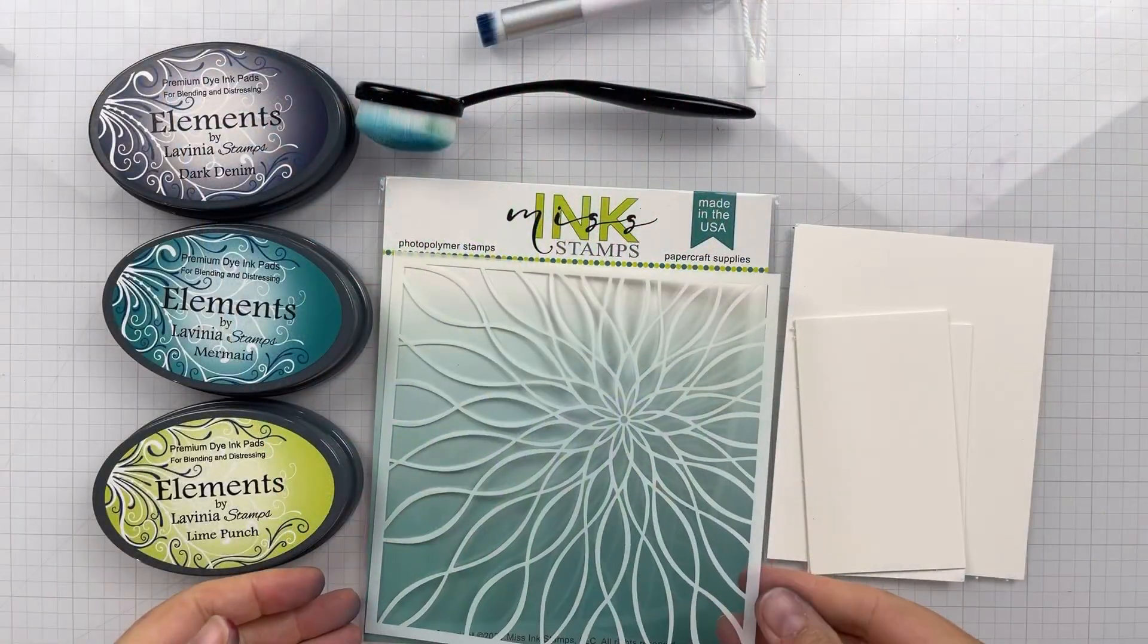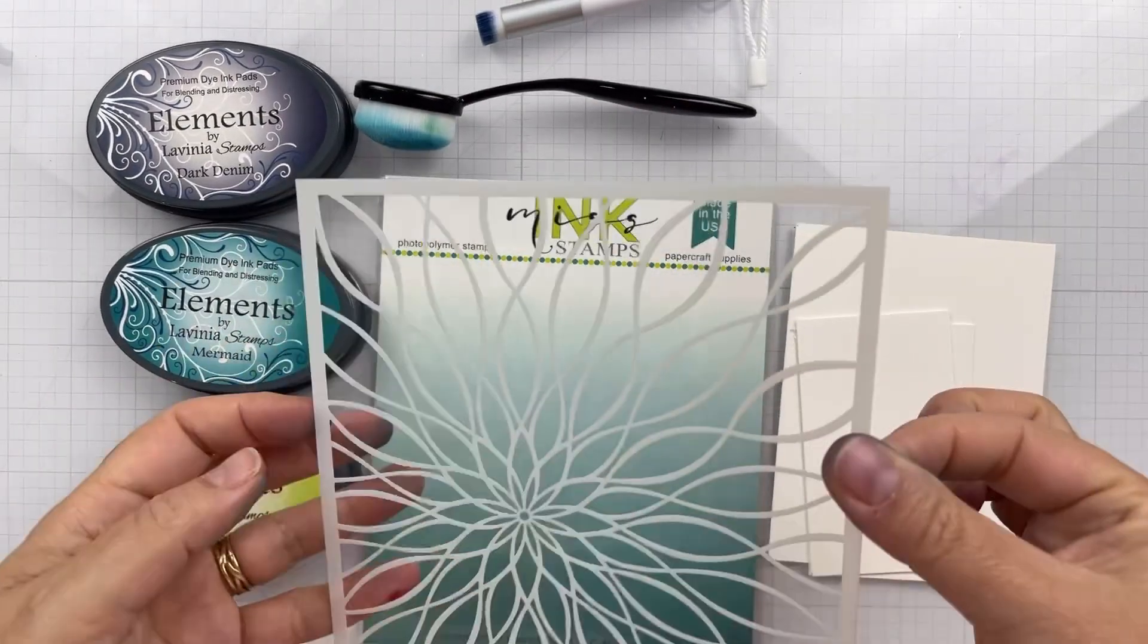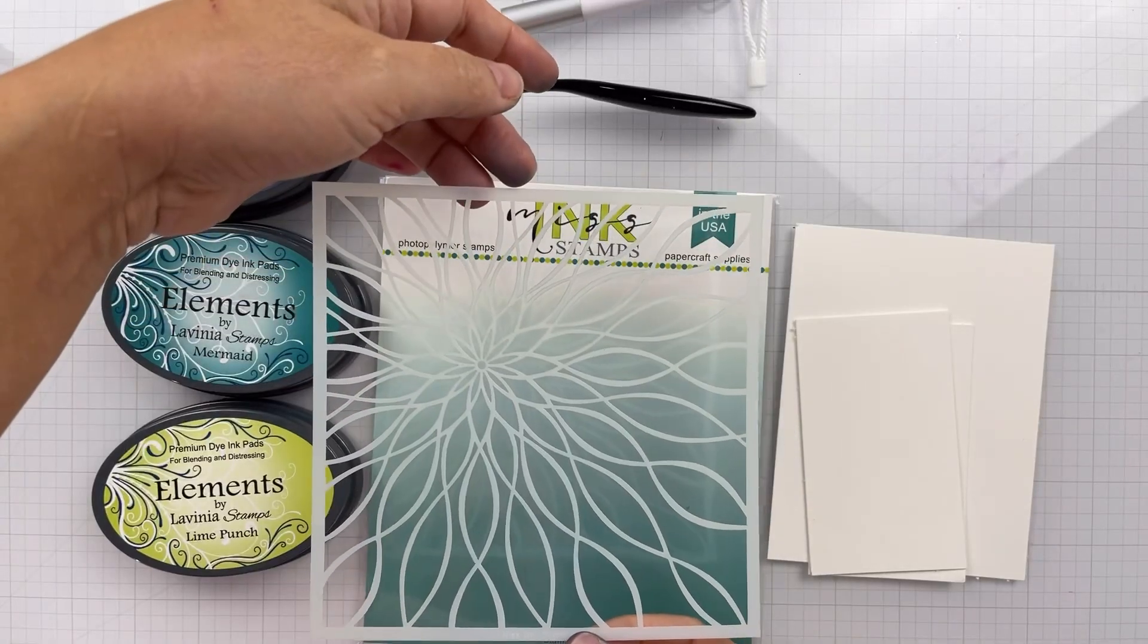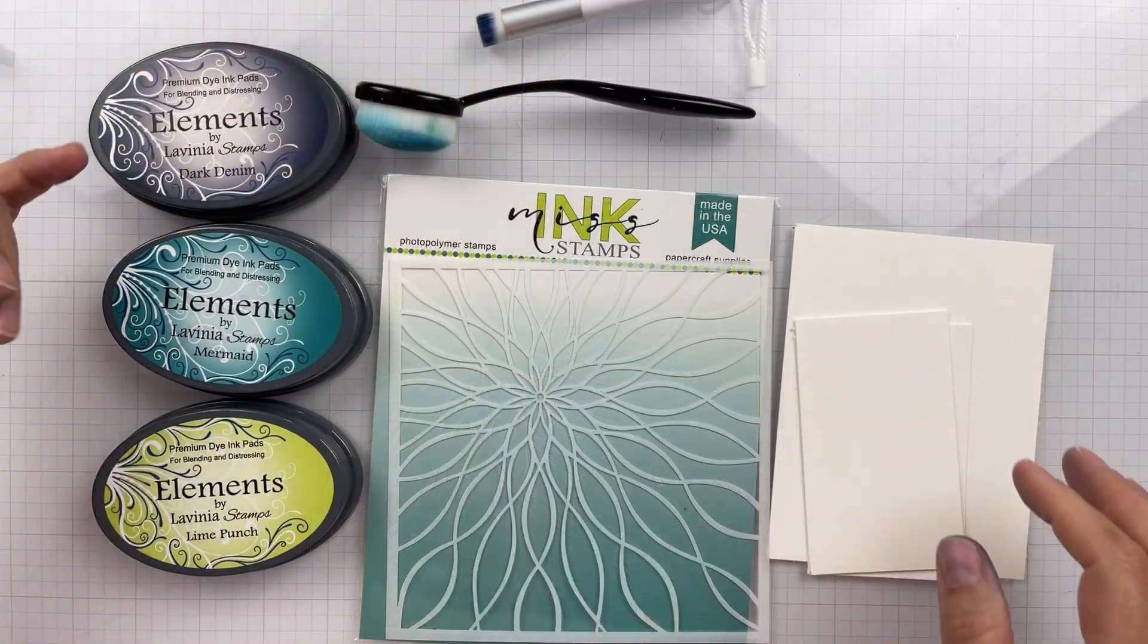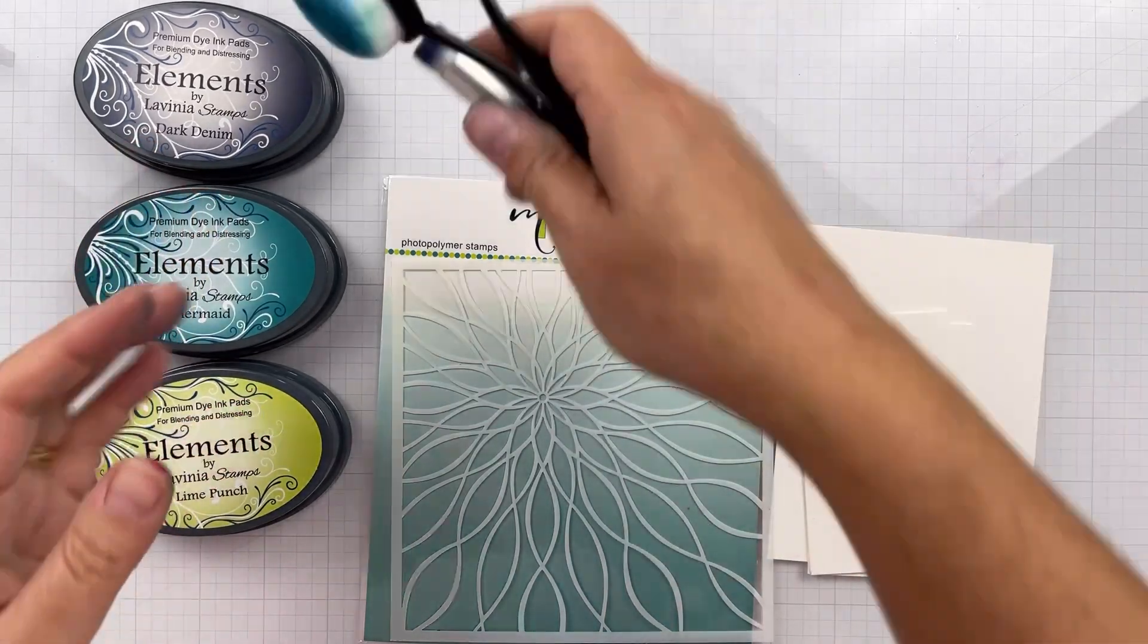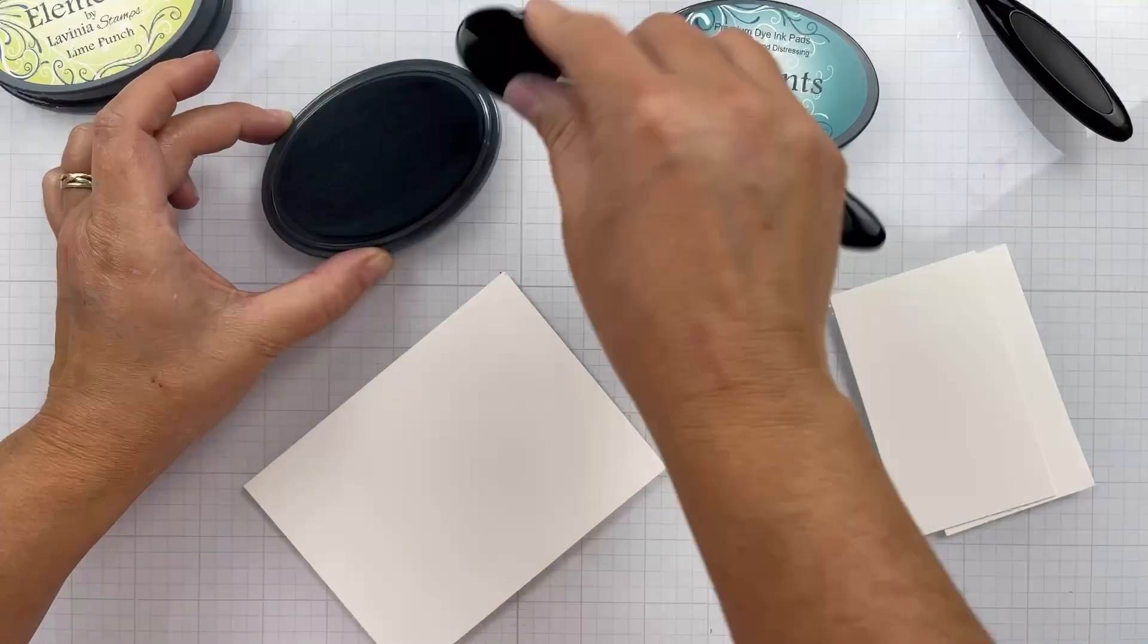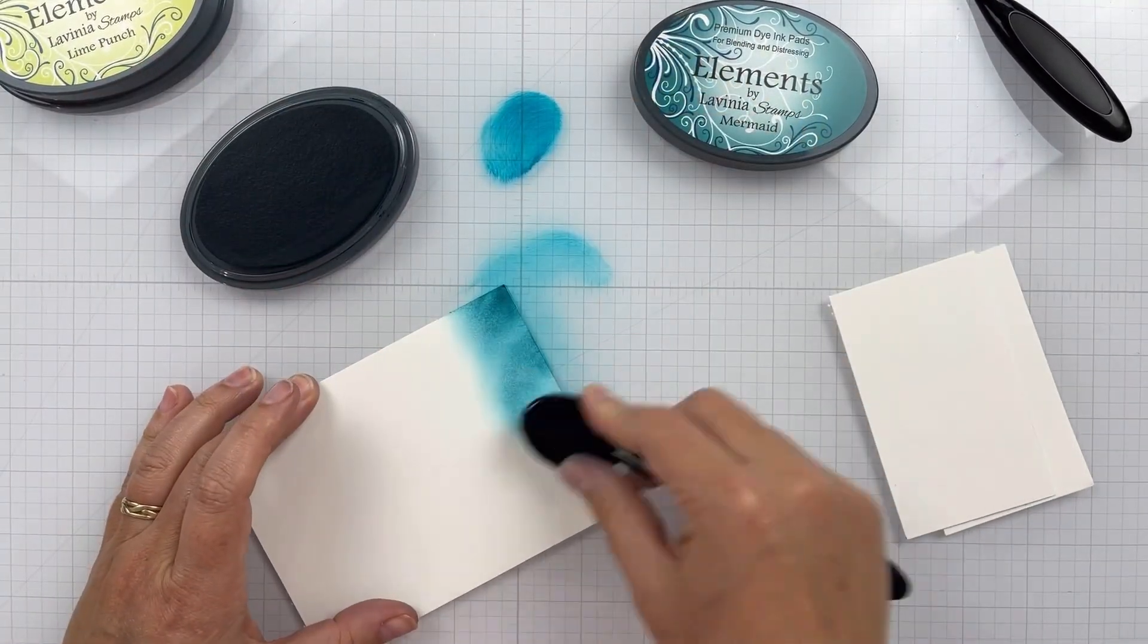The stencil I'm going to use is the Floral Wave Offset stencil from Missing Stamps. I've got some Elements ink pads from Lavinia, but I'm going to give you some other brand combinations in case you don't have the Elements ink pads. Blending brushes, hot press watercolor paper is what I'm going to use.